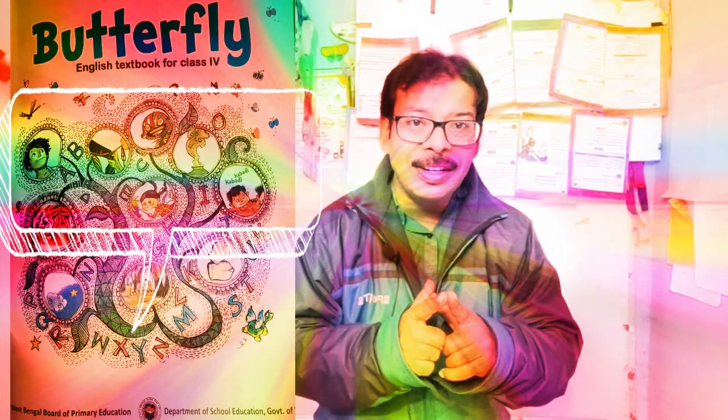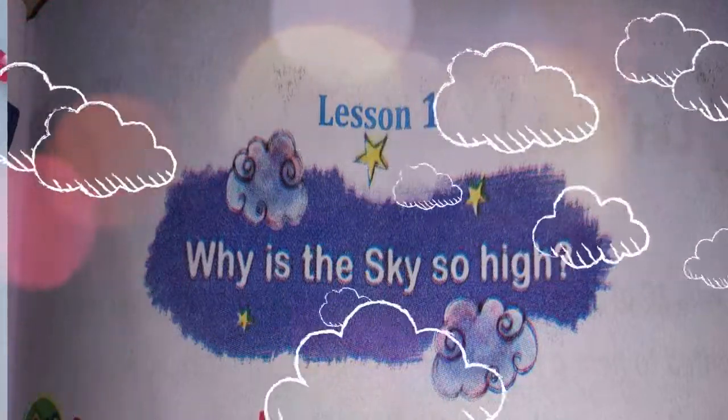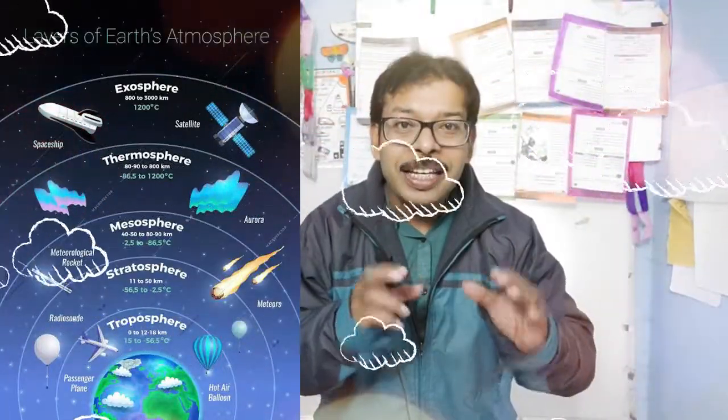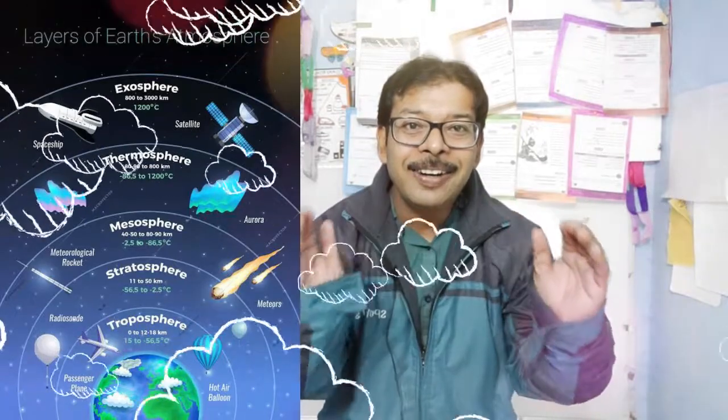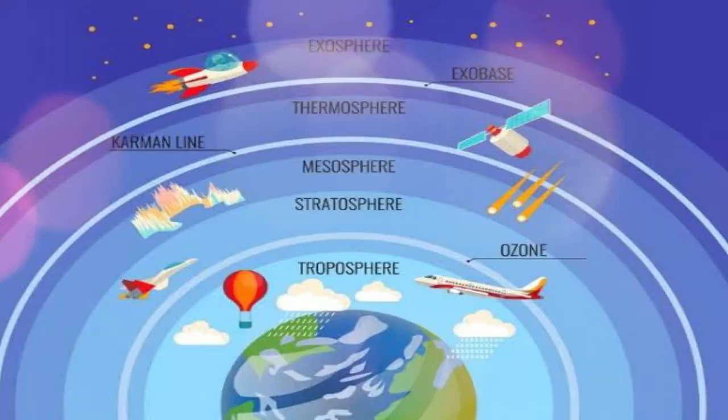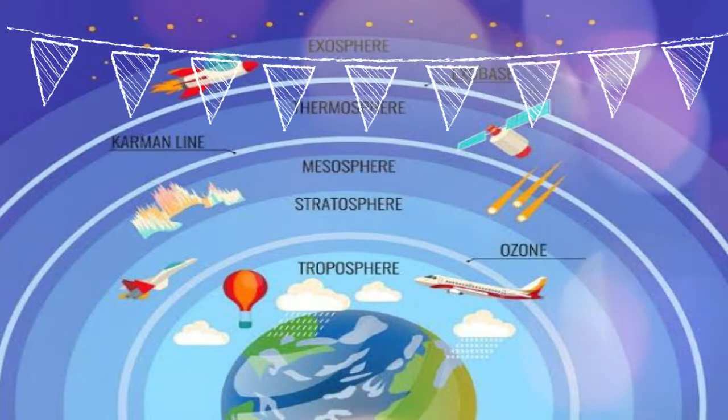Hi, my dear little friends. Today, Class 4, Lesson 4. The first chapter is named 'Why is the Sky So High?' Now there are many spheres — stratosphere, atmosphere — but if the sky was like an umbrella, we could touch the sky and scholarly objects would be with us.